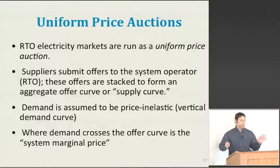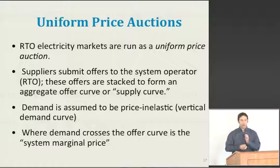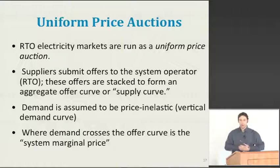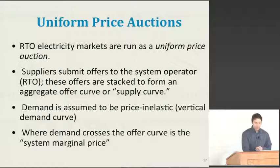So whatever demand happened to be, that's what it was — they would pay whatever price the market happened to produce. At the point where this vertical demand curve crossed the supply curve was the market clearing price, or what we call the system marginal price for that particular time.